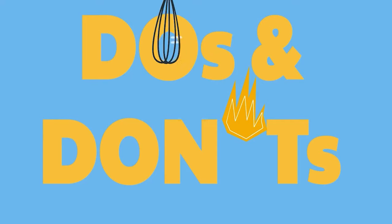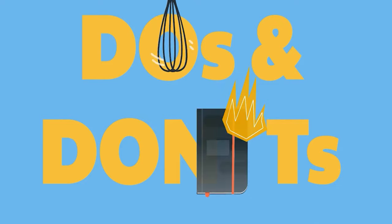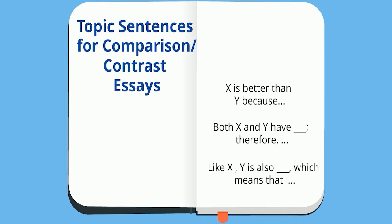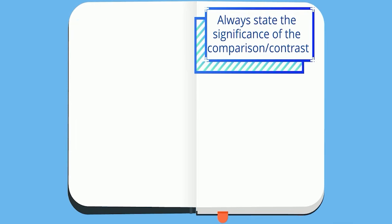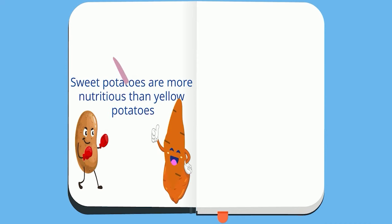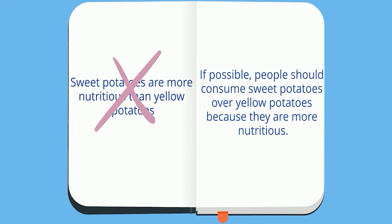Now that you know some do's and don'ts about writing topic sentences, here are some templates you can use for different types of essays. In comparison/contrast essays, many students can easily state what items have or don't have in common, but they fail to state the significance of the comparison or contrast.